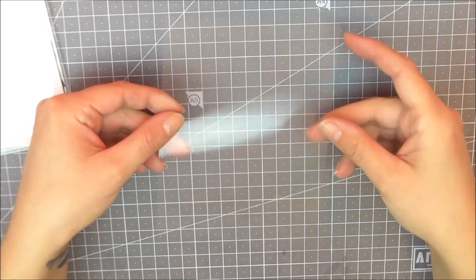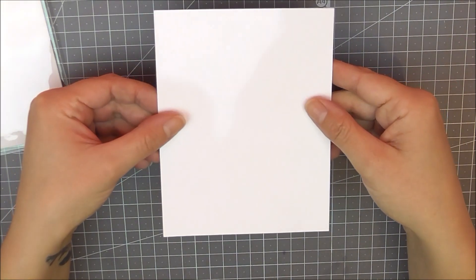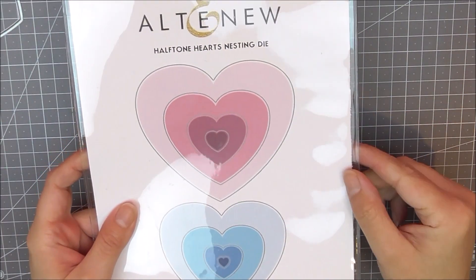To start with, I'm going to be using a piece of acetate that's four and a quarter by five and a half, exactly the same size as the card panels and card bases I'm going to be using. This is going to work as a guide - we're not actually going to use these for our cards, it's just going to be a guide.